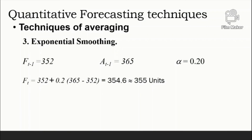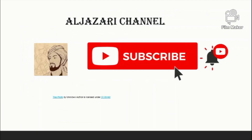A number of different approaches can be used to obtain a starting forecast, such as the naive approach or the average of the first several periods. In this video, naive and averaging techniques were explained as examples of the quantitative forecasting approach. The next video describes other forecasting methods, so keep following and subscribe to be notified of new videos.